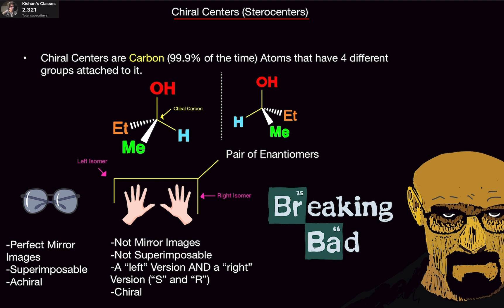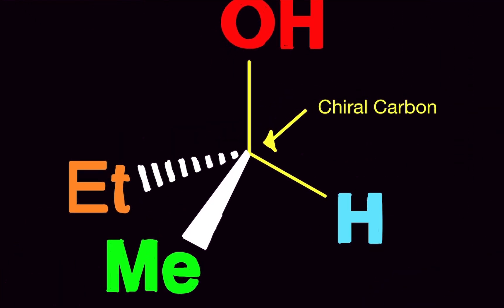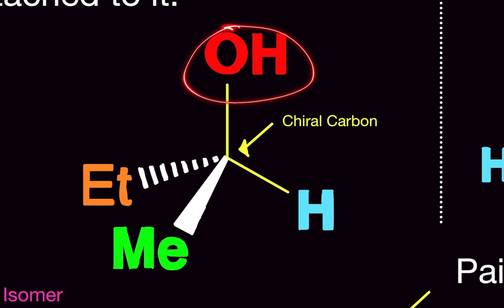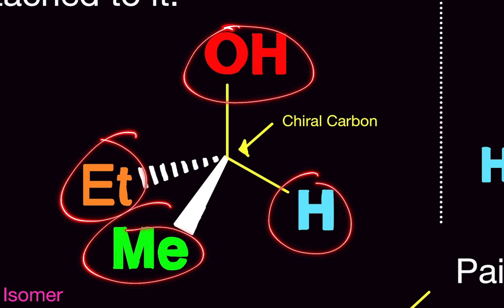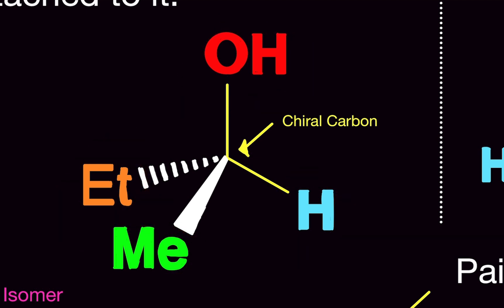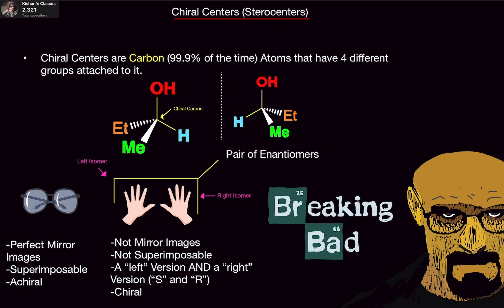Chiral centers are carbon atoms 99.9% of the time — so not always, but most of the time — they are carbon atoms that have four different groups attached to them. For example, here's a carbon with an OH group, an ethyl group, a methyl group, and a hydrogen — four different groups — so it is a chiral carbon, also known as a stereocenter.